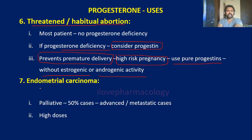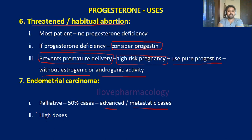The seventh use is that progesterone can be used in endometrial carcinoma as a palliative drug. Treatment with progesterone is effective in 50% of cases with advanced or metastatic endometrial carcinoma. The dose used in treating endometrial carcinoma is very high.